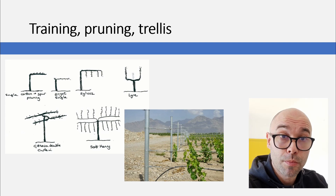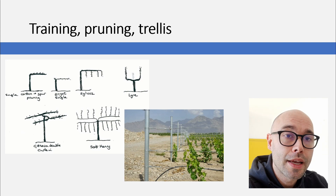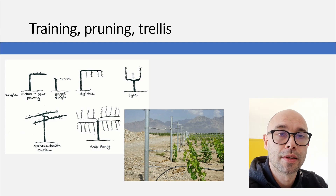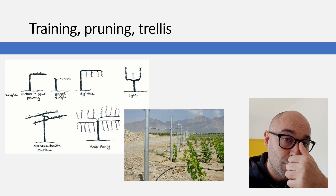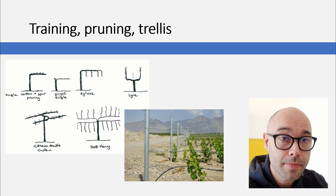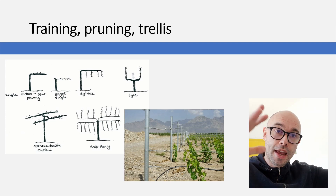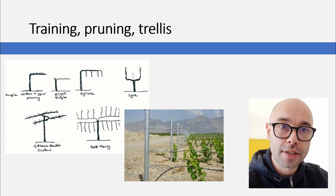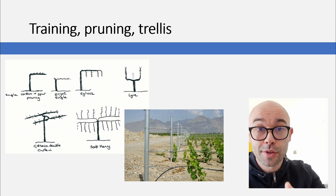Usually bigger vines — meaning they have more woody parts — are used in vineyards where there's a lot of input. When I say input I mean a lot of sun, a lot of heat, a lot of nutrients and a lot of water. On the other hand, if you don't have a lot of inputs or if you're lacking inputs, you need smaller vines, because in a climate where you don't have all those inputs you don't have enough resources to spend on a big vine.